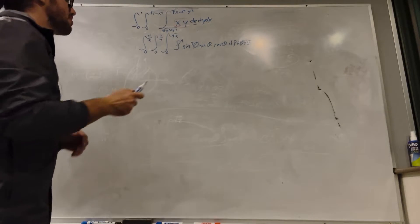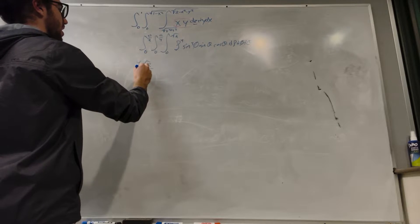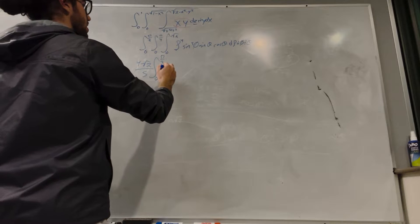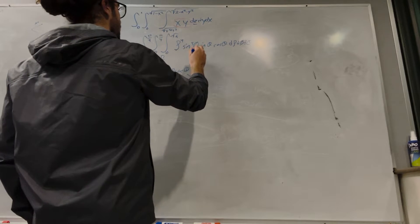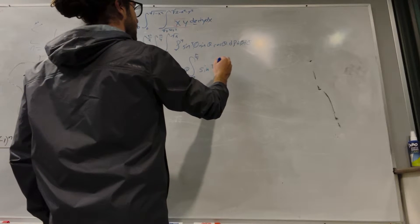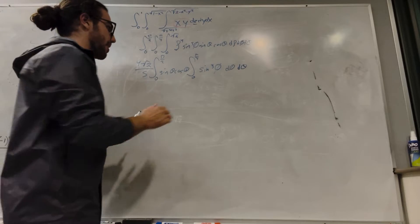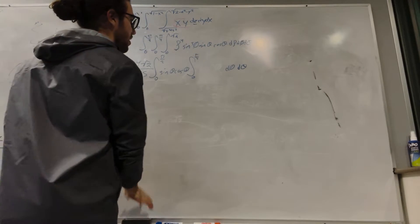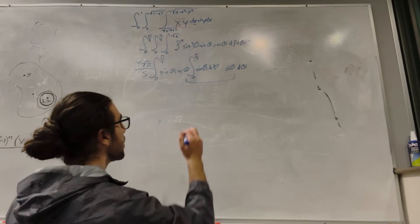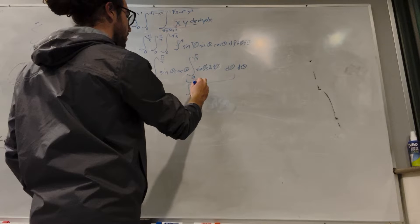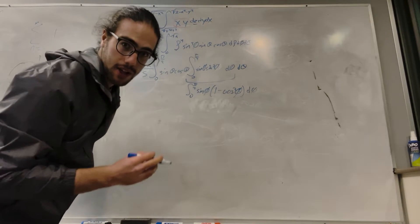Here's our integral — I've simplified by combining everything together. Solving the rho integral, this will become rho to the 5 over 5, evaluated to square root of 2, giving us 4 square root of 2, which I'll bring out as a constant. So we have 0 to pi over 2 with sine theta cosine theta, and 0 to pi over 4 with sine cubed phi d phi. I can actually break sine cubed phi into sine phi times sine squared phi, which becomes the integral from 0 to pi over 4 of sine phi times (1 minus cosine squared phi) d phi. You can set up a u-substitution here.